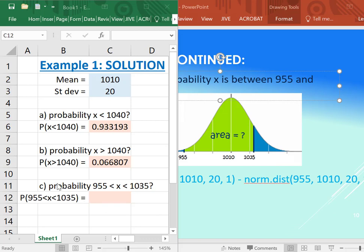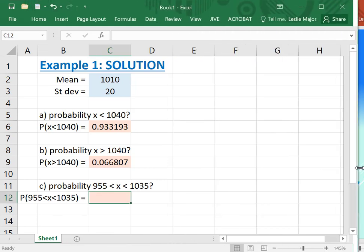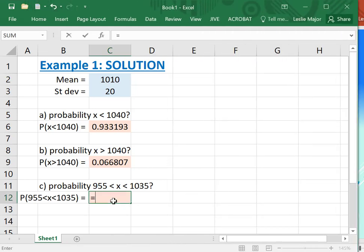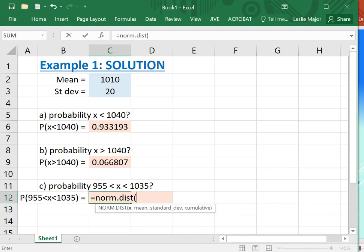Okay, so here we are. We want to be between 955 and 1035, and to do this in Excel again, we just subtract the two norm.dist. You could actually even just grab the text off of the PowerPoint here and just paste that straight in here if you wanted.